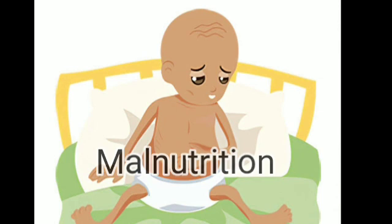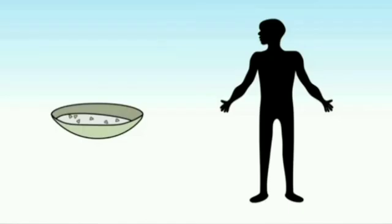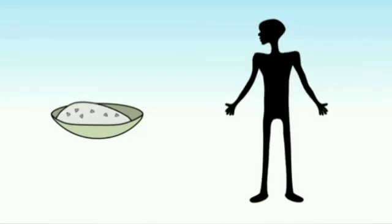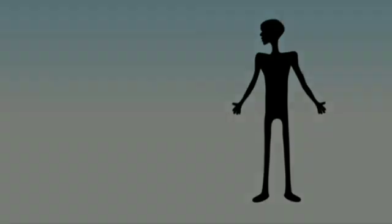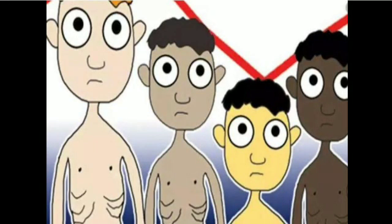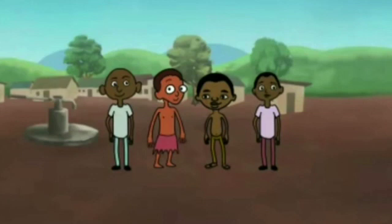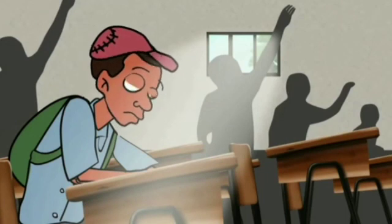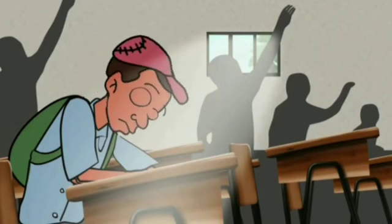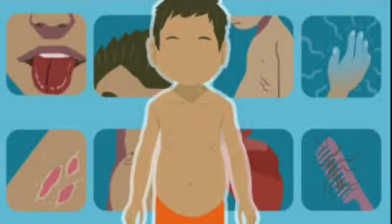Malnutrition. If a person's diet lacks some constituents over a long period of time, that person does not get proper nourishment. Such a condition is called malnutrition. For example, if a person does not get enough carbohydrates and proteins, their growth is stunted. They feel constantly tired and cannot cope with their studies or games or other tasks. Deficiencies of vitamins or minerals cause some specific disorders.